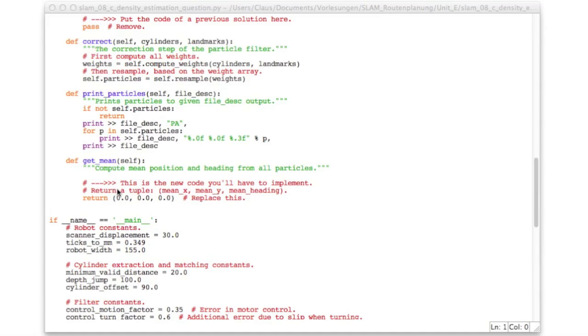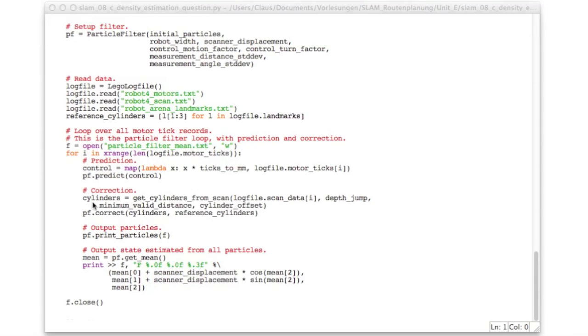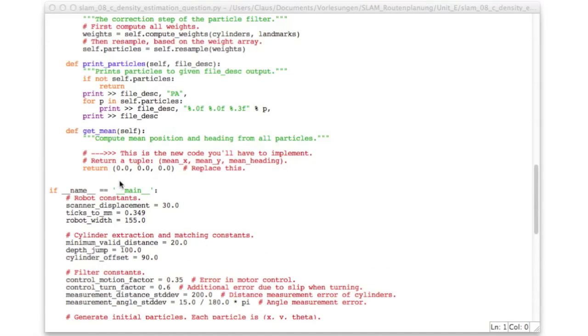And all you'll have to do is to implement this get mean function, which is a method of the class. And it should return the mean x, mean y, and the mean heading. And that's all there is to do. And down there, in main, I modified the loop, which now not only prints the particles, but also gets the mean, and then prints out the x, y and heading, where the x and y is, as usual, corrected for the scanner displacement. And this writes an F record for filtered data, which we used earlier. So the log file viewer is able to understand this. So now please program this get mean function.